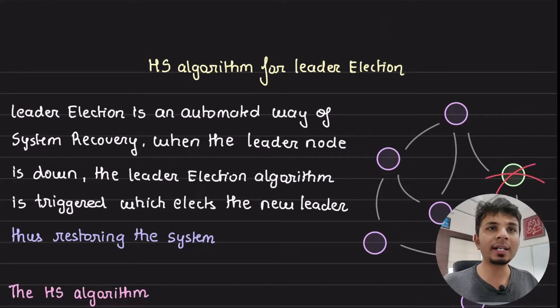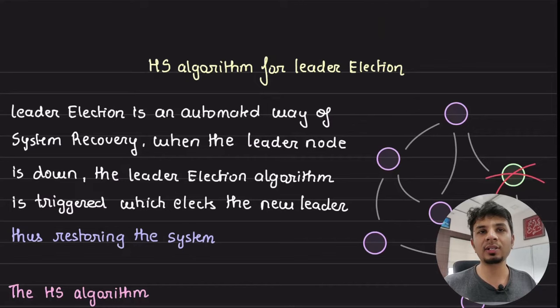Leader election is important in every single distributed system as it enables us to auto-recover from failures. In this video, we take a detailed look at a synchronous ring-based algorithm called the HS algorithm and see how it works on a bidirectional network in order to achieve O(n log n) complexity.